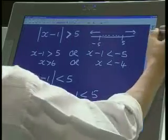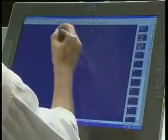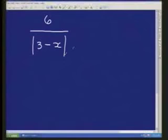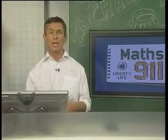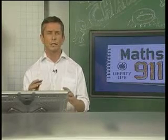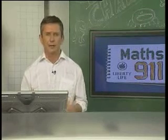So let's look at the first part of the challenge question. We had 6 over the absolute value of 3 minus x is bigger than 2. The first complication here, remember these are challenge questions. They're not supposed to be straightforward. It's a challenge. For those of you that are doing standard grade mathematics, just bear with us. Try and understand what's going on here.